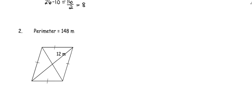Moving on to number two. When I look at number two I see that all four sides are congruent. So when the perimeter is 148, I'm going to take that perimeter and I'm going to divide it into four equal pieces, which is going to give us 37, which means each side is going to be 37 meters.